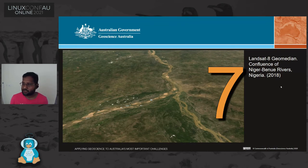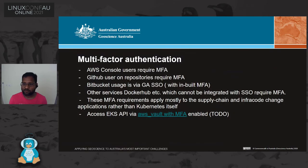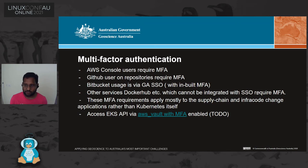This slide is about MFA. We use MFA wherever we can in our supply chain and management tools — AWS console, GitHub, Bitbucket, Docker Hub. For the CLI tool kubectl, we use AWS Vault to manage our credentials, and AWS Vault has support for MFA in the CLI tool. We apply it as much as possible when accessing the cluster and throughout the supply chain process.